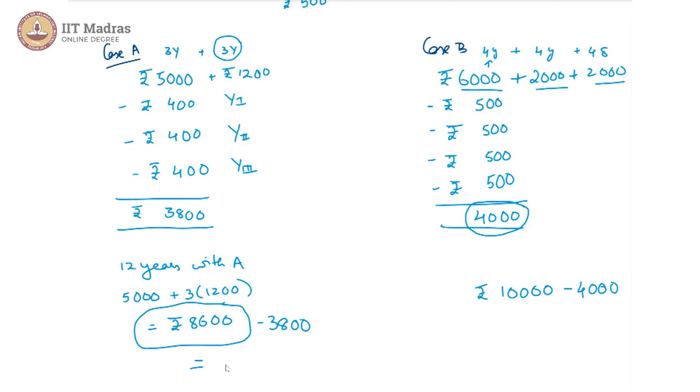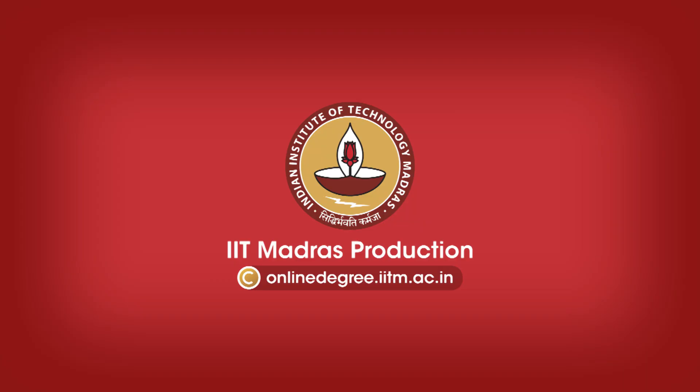So here we get rupees 4,800 whereas here we get rupees 6,000. So the expenditure is clearly lesser for A. So A would be the good choice for Vijay. Thank you.